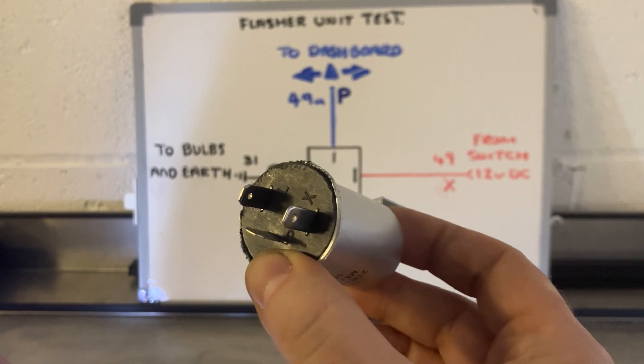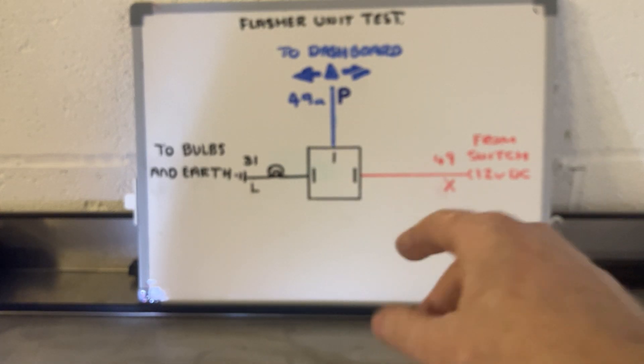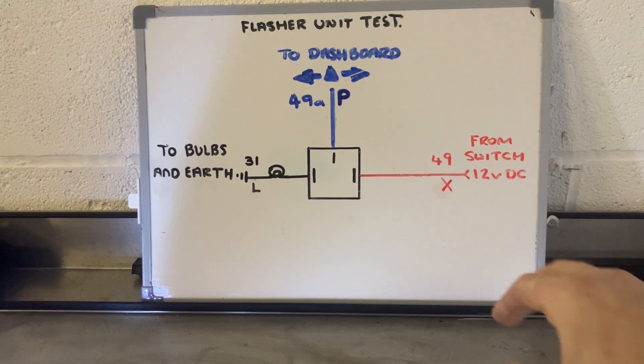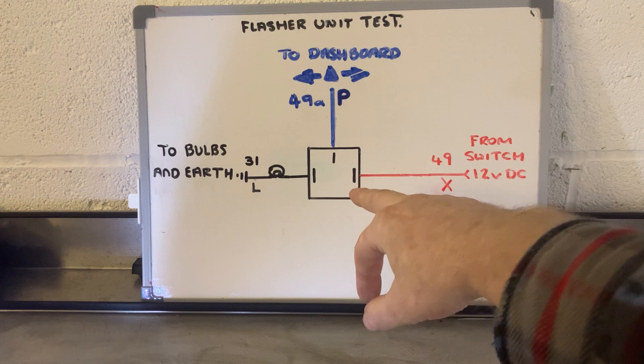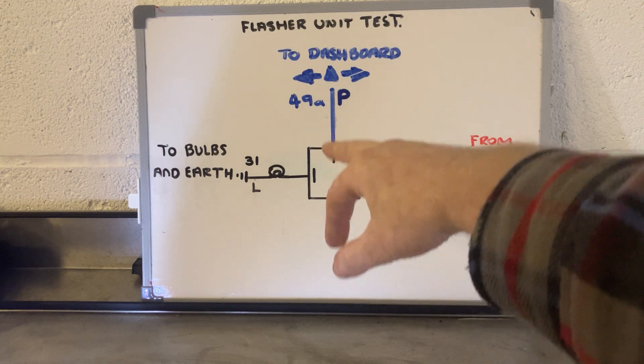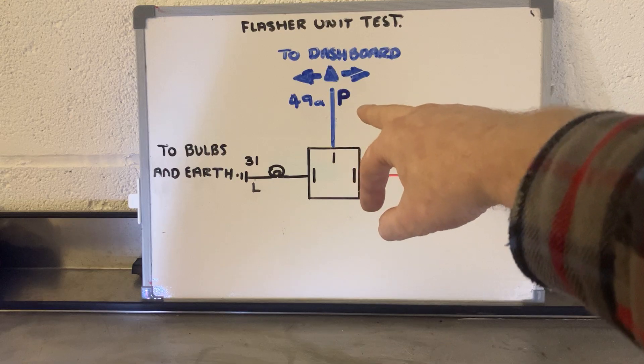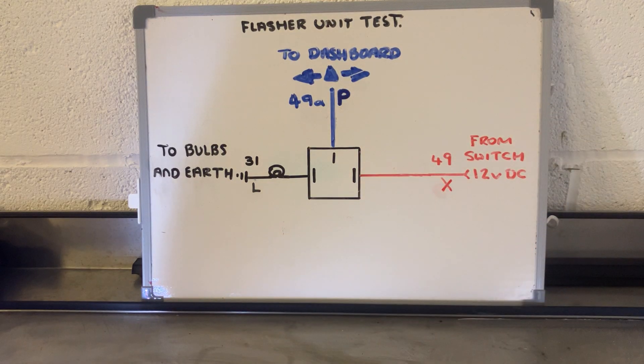So for this one, we've got a P, an L and an X for the 3-pin. If you look on this drawing I've done on the whiteboard at the back of the workbench, X will be your supply voltage from the car battery. It will then go into your flasher unit. P will be going towards your dashboard. So you've got your dashboard indicator lights flashing and L will be load, which will go on towards your actual bulbs and then earth.